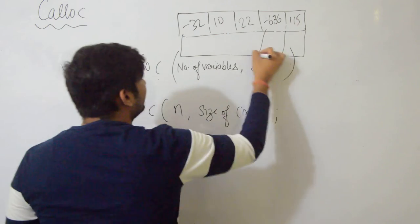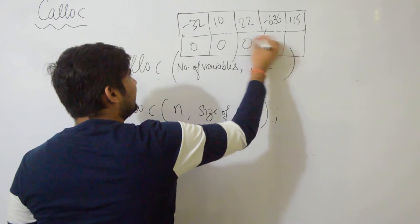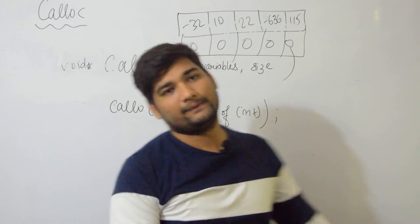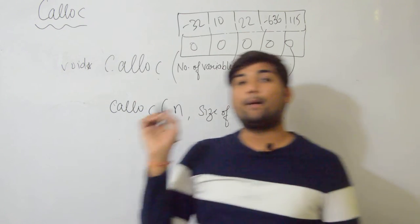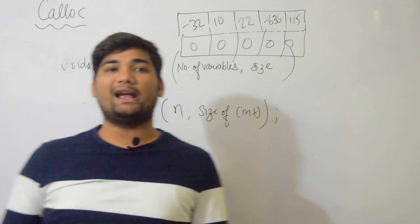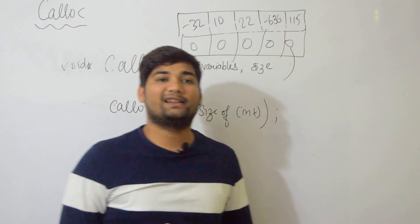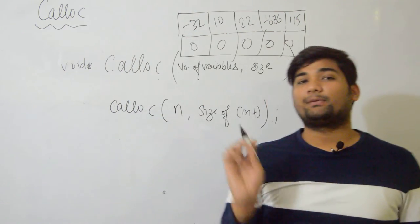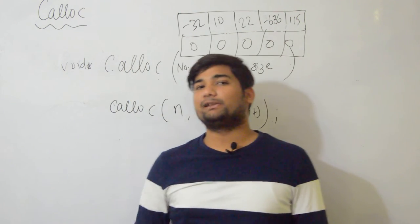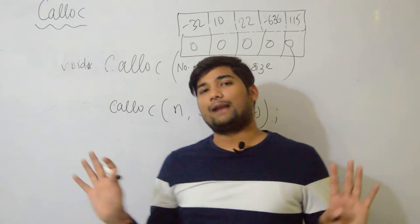But when you request memory from calloc, if you asked for this memory from calloc, the entire memory is always initialized with zero. Calloc does one extra thing - it initializes the entire memory with zero for you.